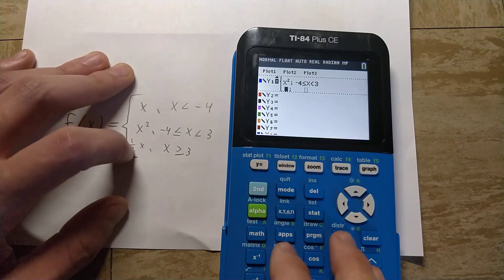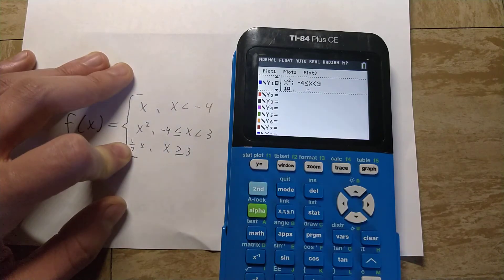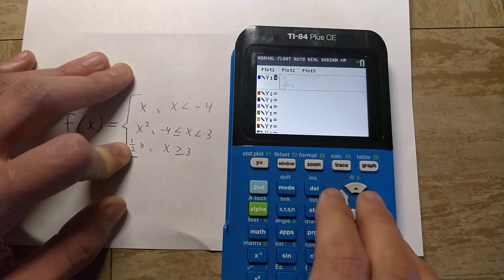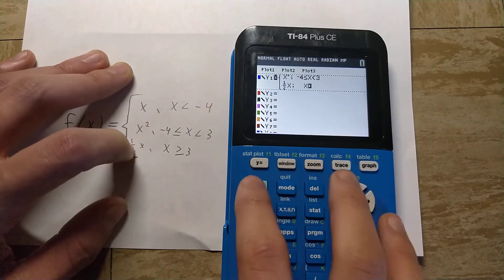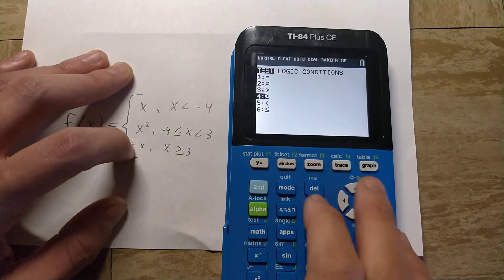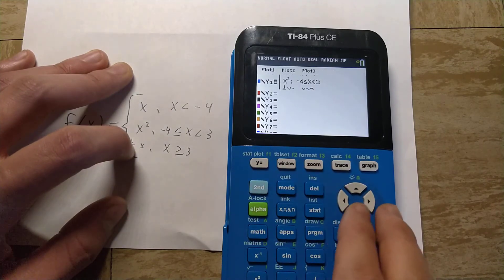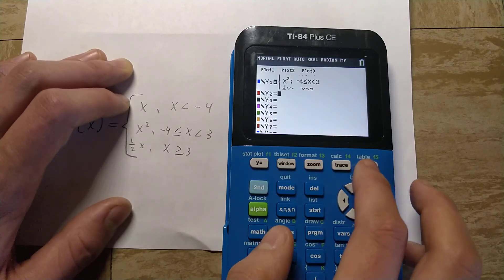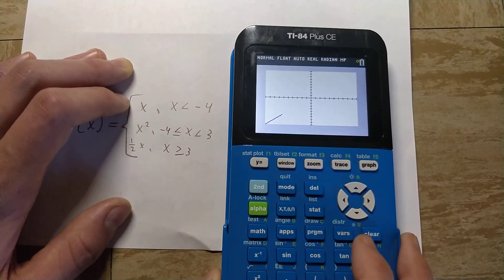And then the final one here would be one half x when x is greater than or equal to three. To see the result, we would just press the graph key, and it will start graphing the function that we have typed in.